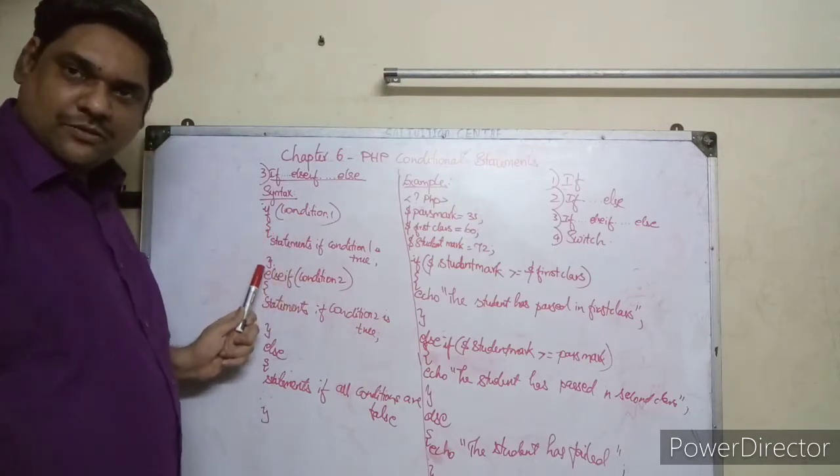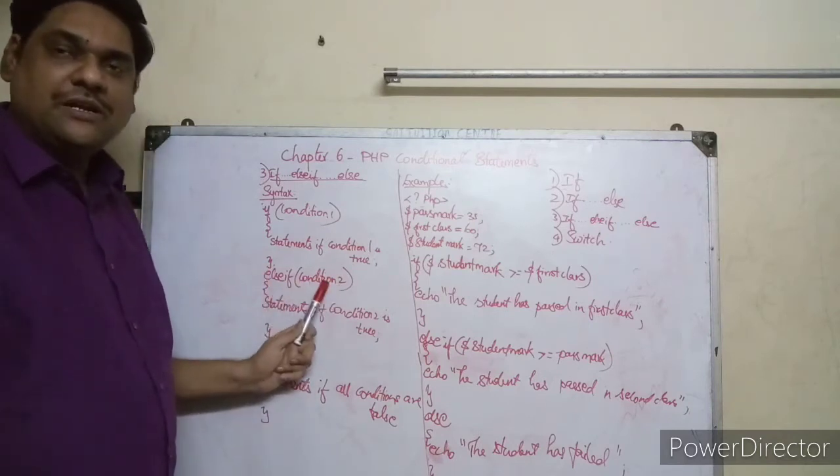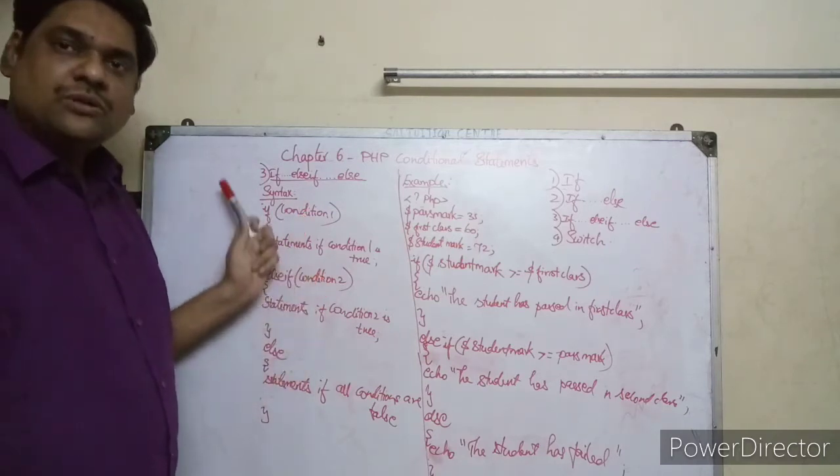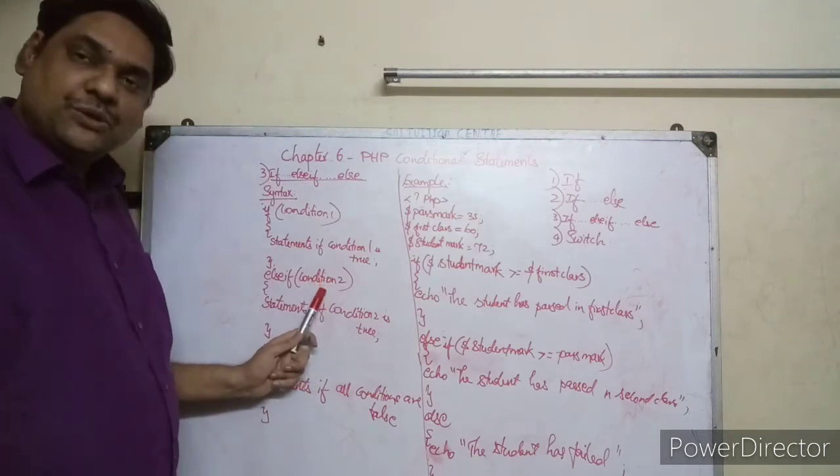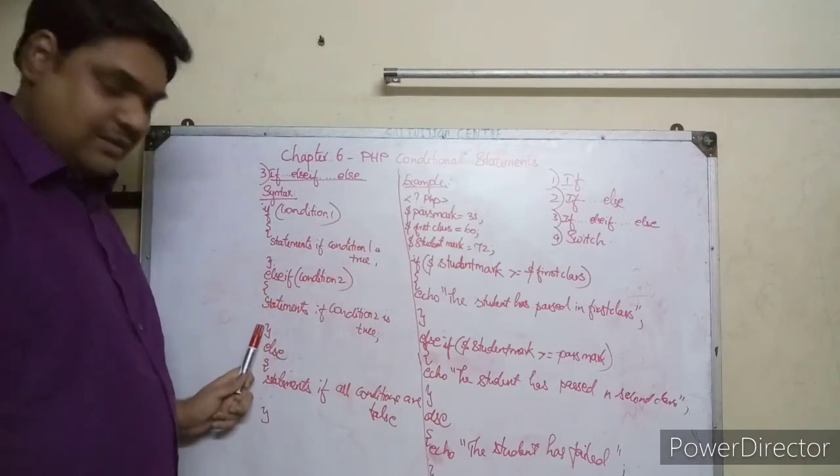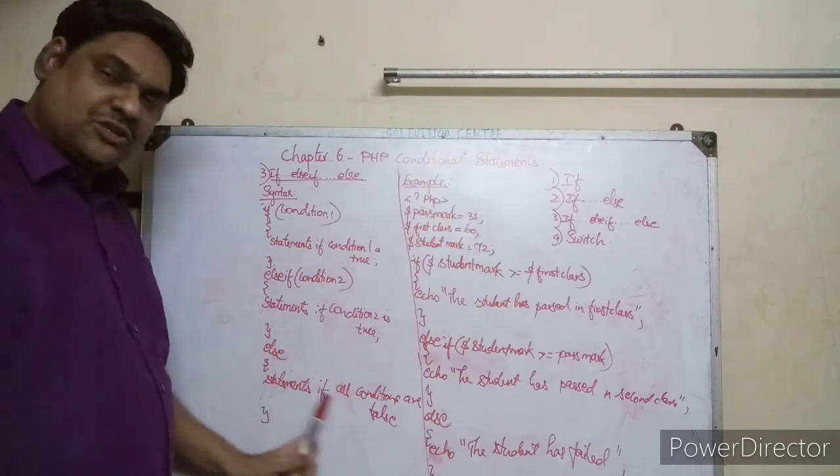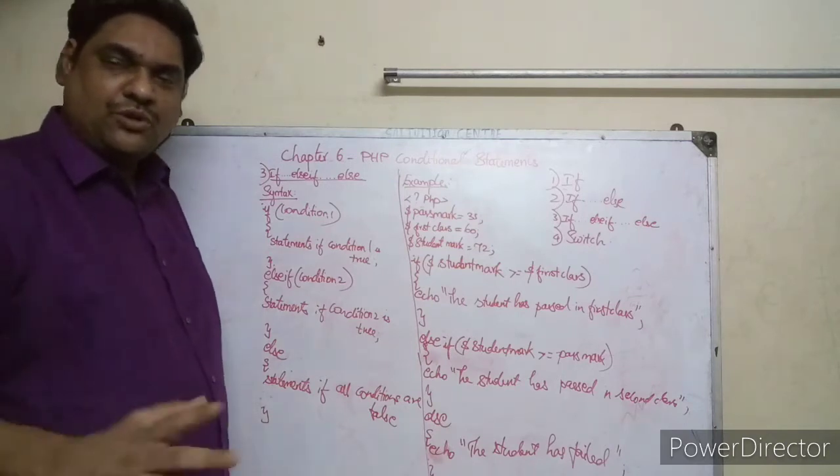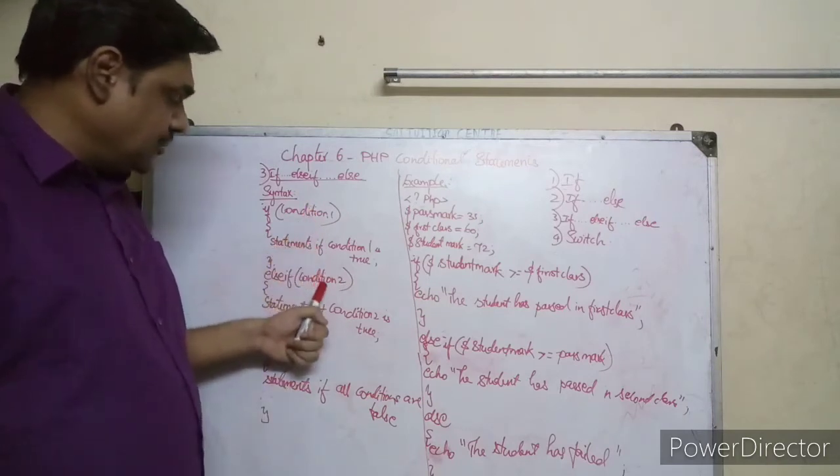Close curly braces, else if condition two - suppose the first condition is false, then it will check the second condition. If the second condition is true, then those statements inside the open and close curly braces will execute. And after that, you can have as many else-if conditions as you want: else if condition three, else if condition four, as many conditions you want you can add.